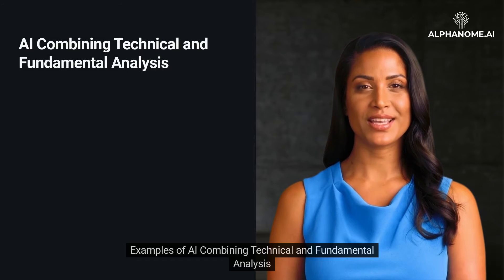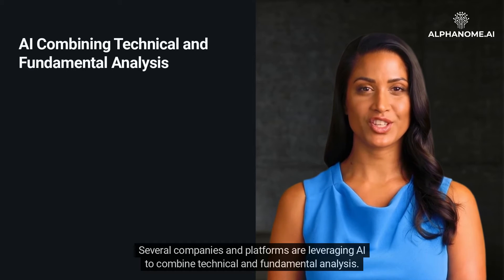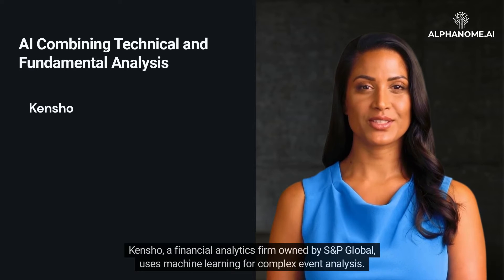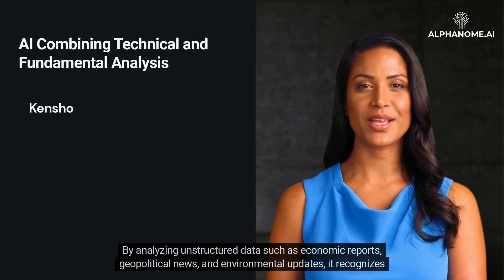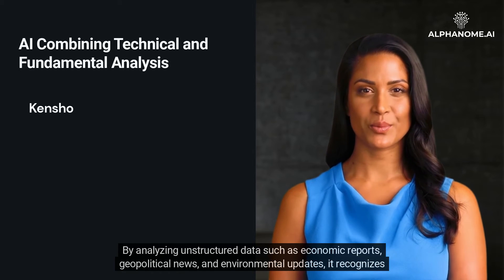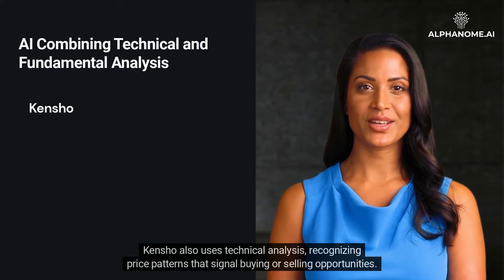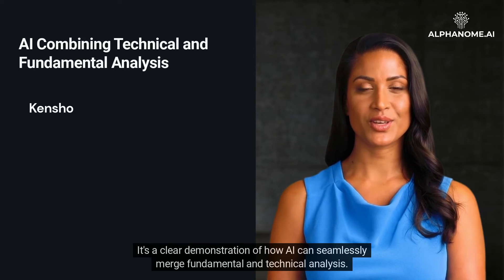Examples of AI Combining Technical and Fundamental Analysis: Several companies and platforms are leveraging AI to combine technical and fundamental analysis. Kensho, a financial analytics firm owned by S&P Global, uses machine learning for complex event analysis. By analyzing unstructured data such as economic reports, geopolitical news, and environmental updates, it recognizes events that might influence the market. Kensho also uses technical analysis, recognizing price patterns that signal buying or selling opportunities — a clear demonstration of how AI can seamlessly merge fundamental and technical analysis.